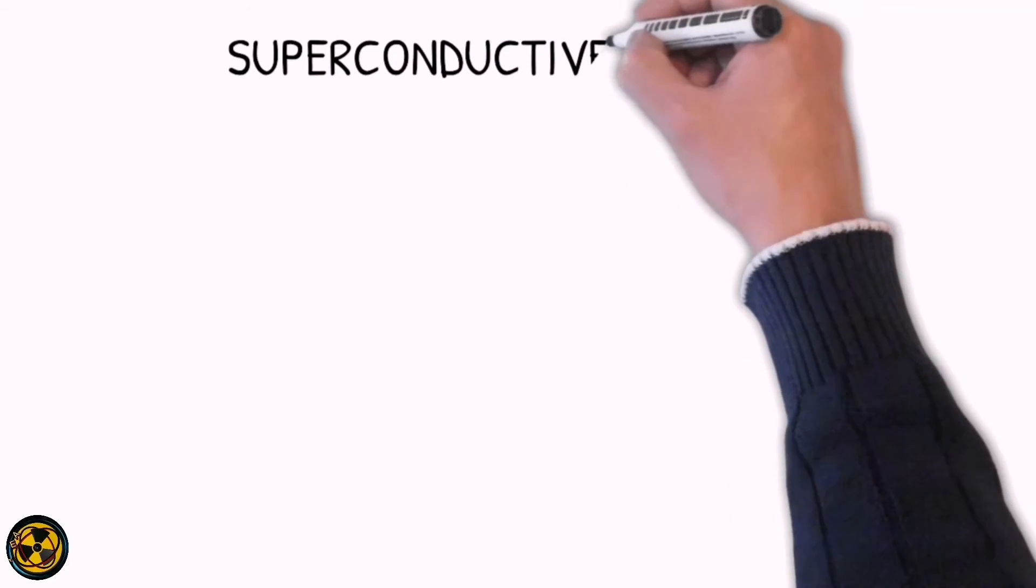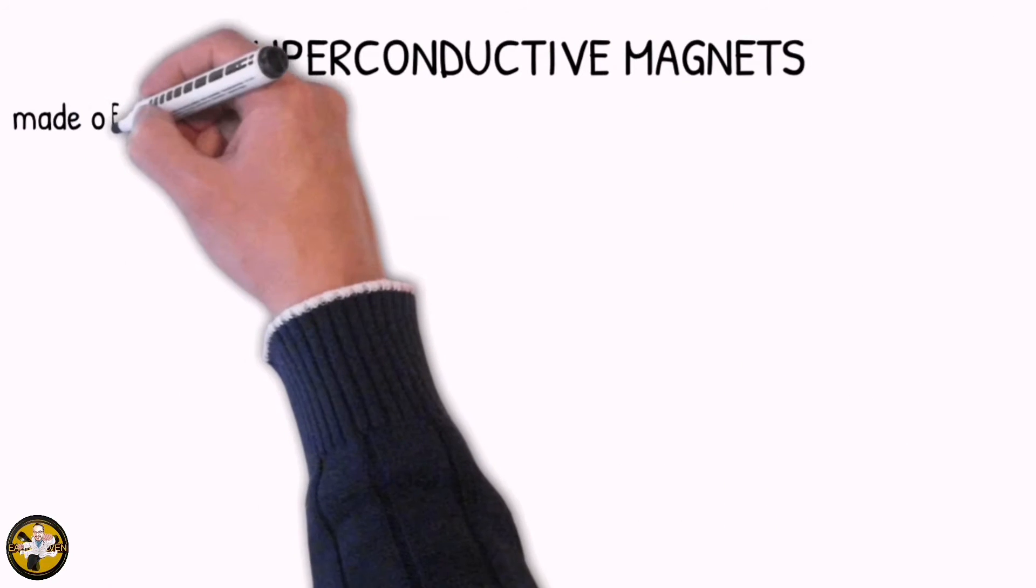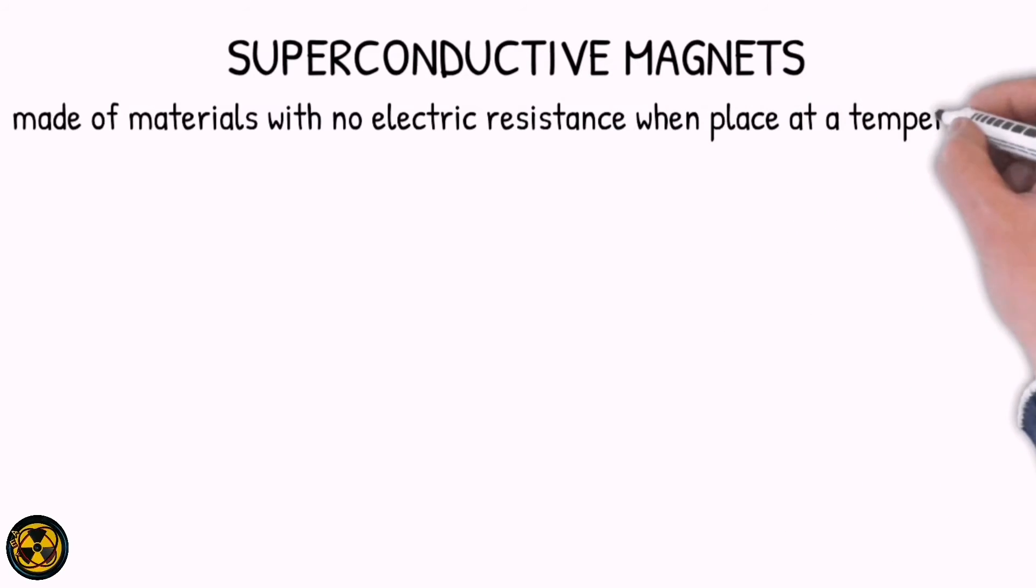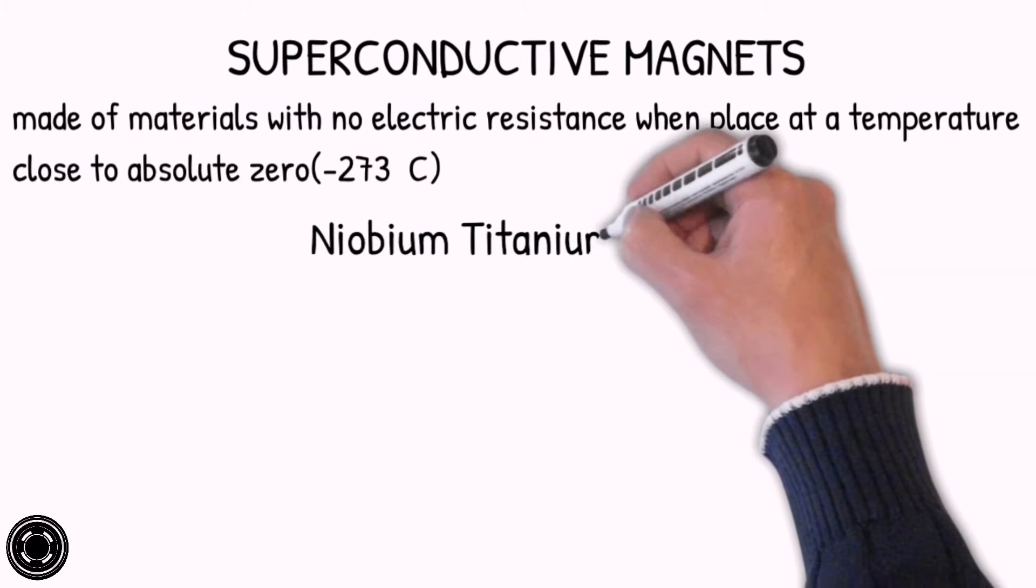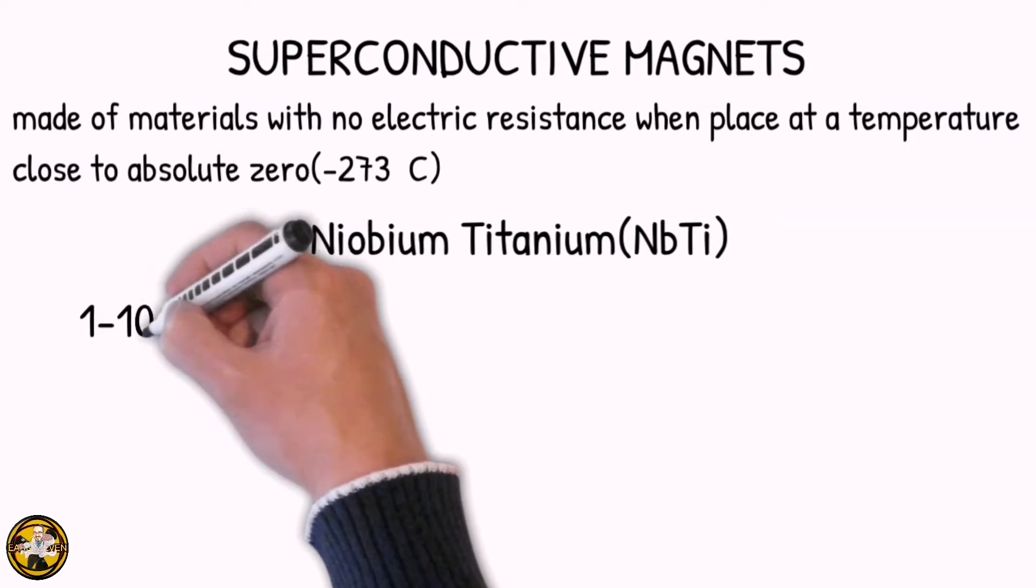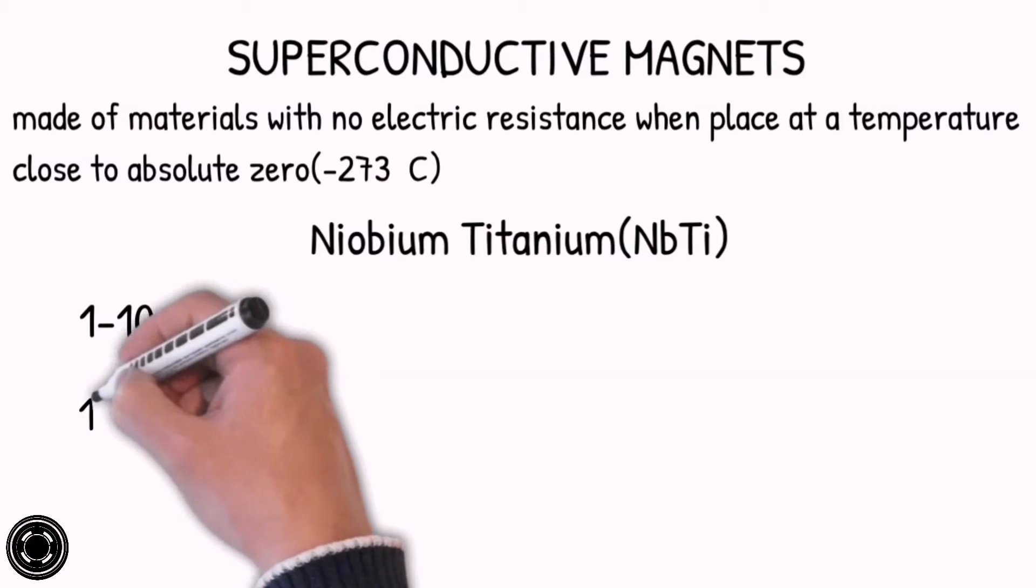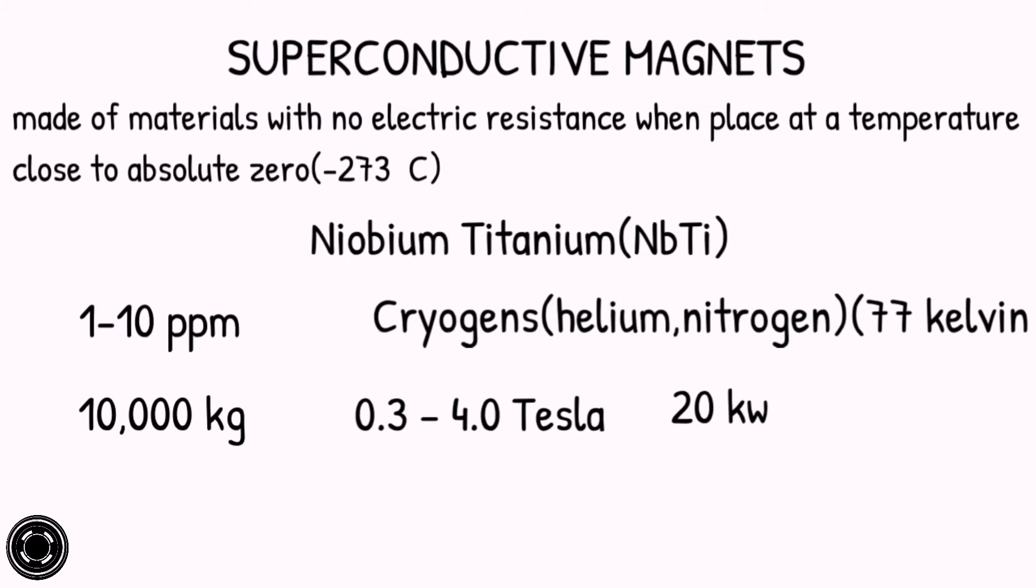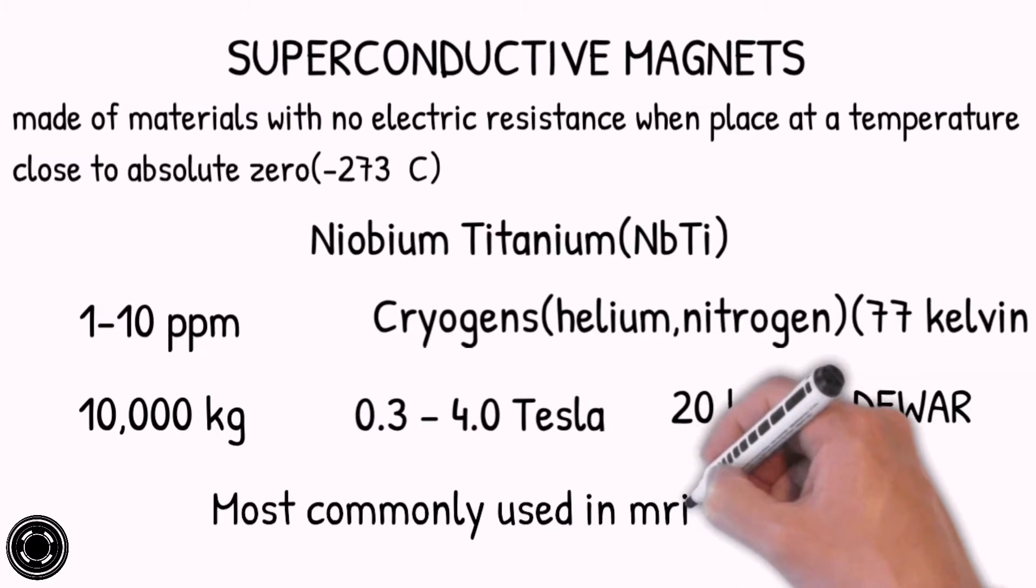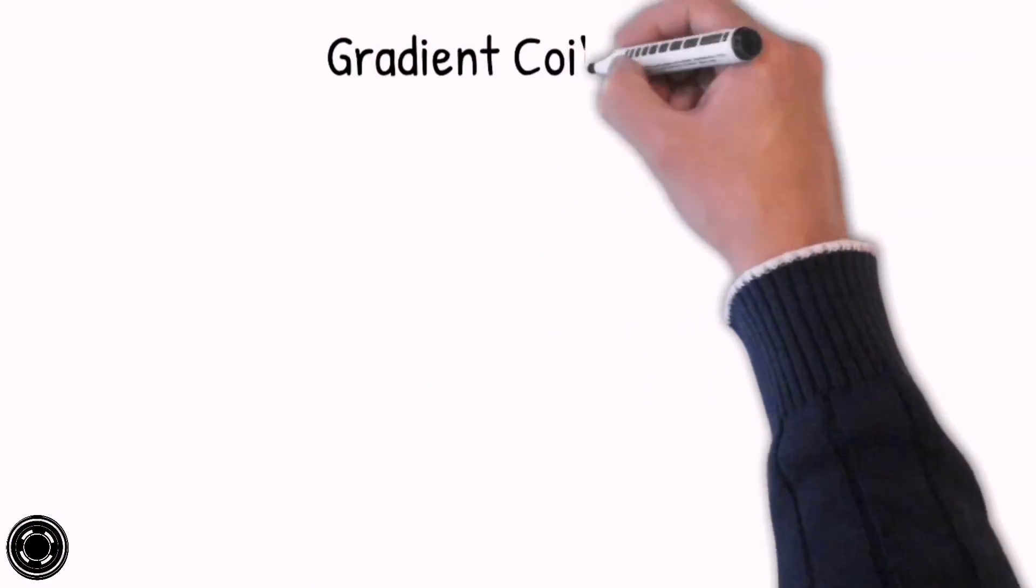The third type of magnet is the superconductive magnet. It is made of materials with no electric resistance when placed at a temperature close to absolute zero. Niobium titanium is the metal used. Magnetic field homogeneity is 1 to 10 ppm, weight is approximately 10,000 kilograms, magnetic field strength is 0.3 to 4.0 Tesla, power consumption is 20 kilowatts. The cooling system used is the cryogen composed of helium and nitrogen, and it is enclosed within a giant container called the dewar. It is the most commonly used in MRI systems.